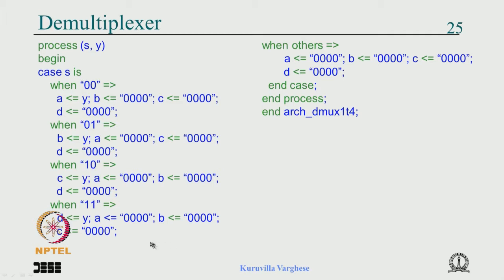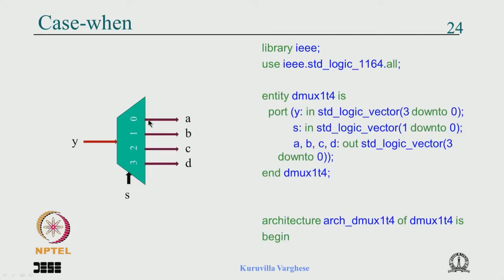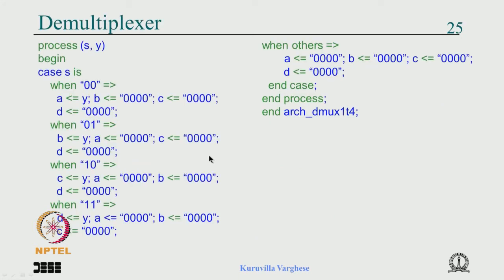One important point: some students think inactive means tri-state, but it is very dangerous to tri-state an output. If you have a single output going to many inputs and you tri-state it, those lines are floating — connected with high resistance to VDD and ground. The input can start switching due to noise pickup. Do not tri-state unless it is a bus, and even a bus when tri-stated must be pulled up or down weakly.